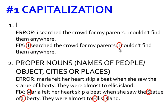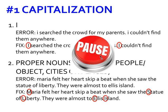The second capitalization error that I see you making is proper nouns. These are names of people or objects, cities, and places. For example: 'Maria felt her heart skip a beat when she saw the Statue of Liberty. They were almost to Ellis Island.' The proper nouns are Maria, because it's a name of a person; the Statue of Liberty, because it's the name of a monument; and Ellis Island, because it's the name of a place. I'd love for you to pause the video and go back and read through your narrative to check for any missing capitalizations.